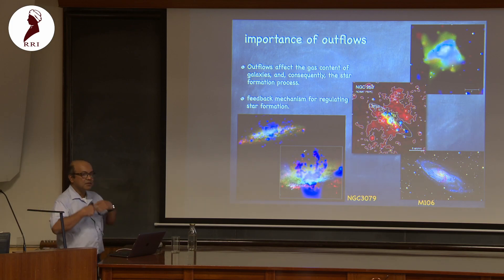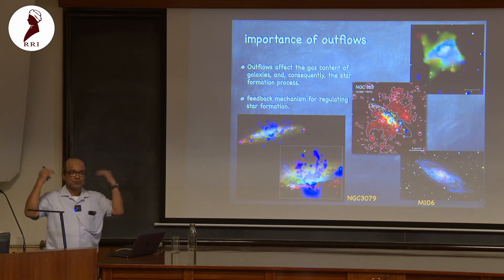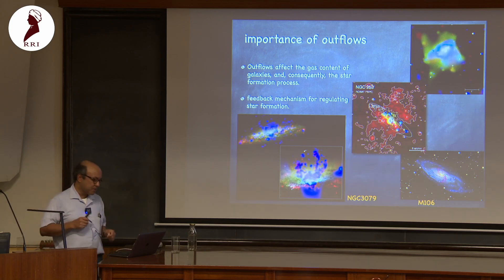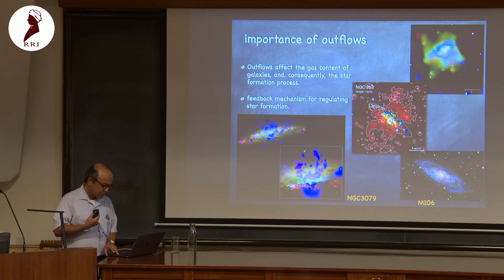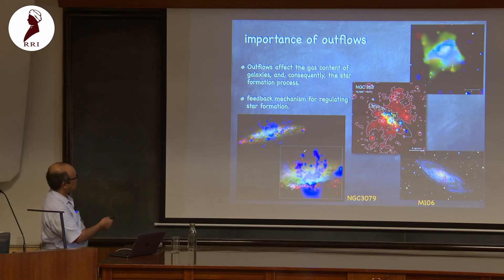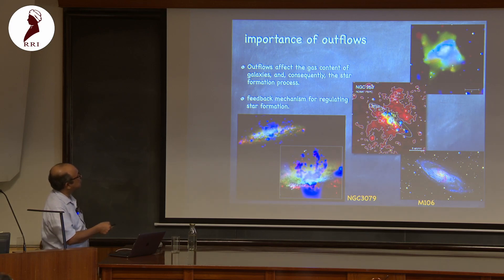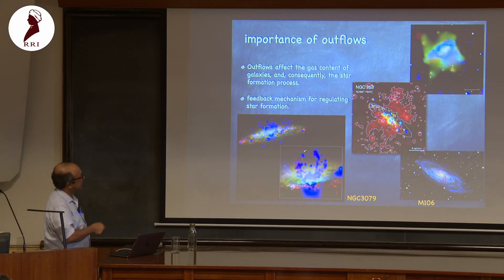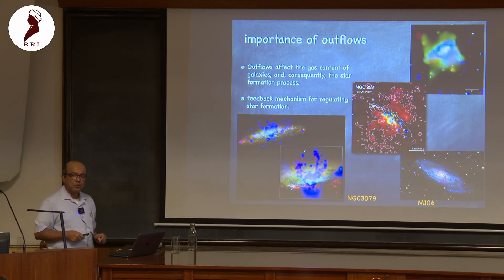Galaxies have produced stars at a slow, steady, and regulated rate, and the clue lies in the process of throwing out gas once in a while. This is a collage of different galaxies — NGC 253 in X-ray from ROSAT, and others in optical — showing the same phenomenon in different wavelengths.